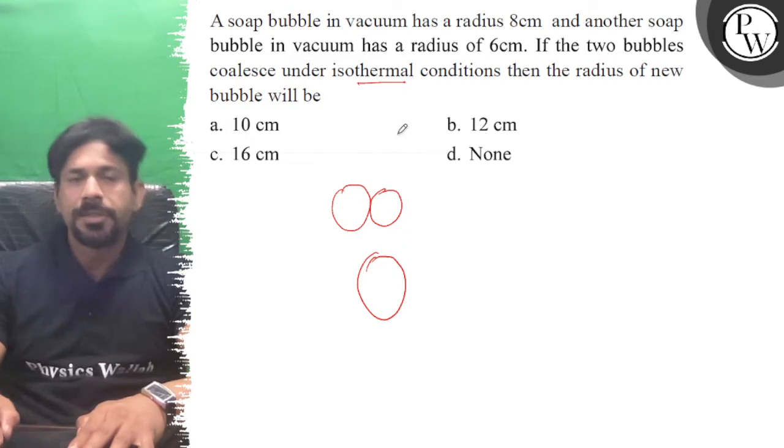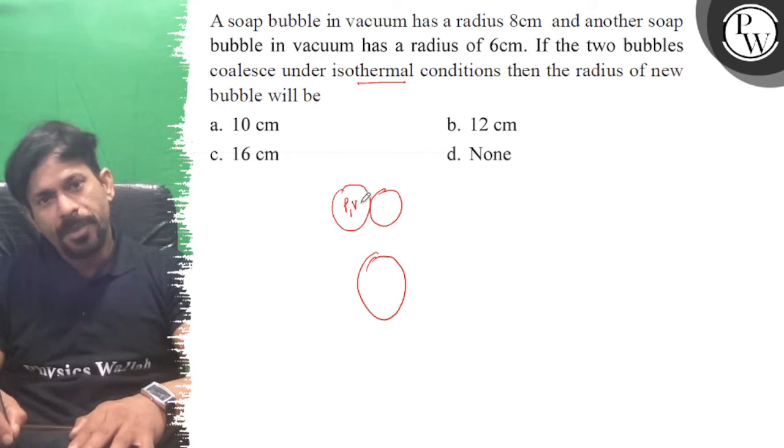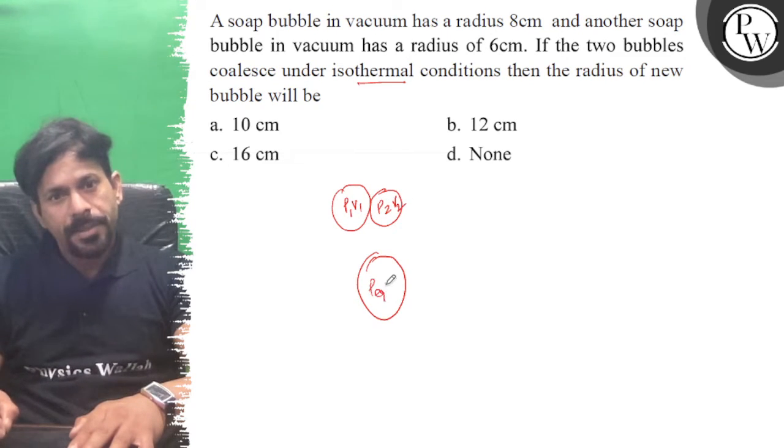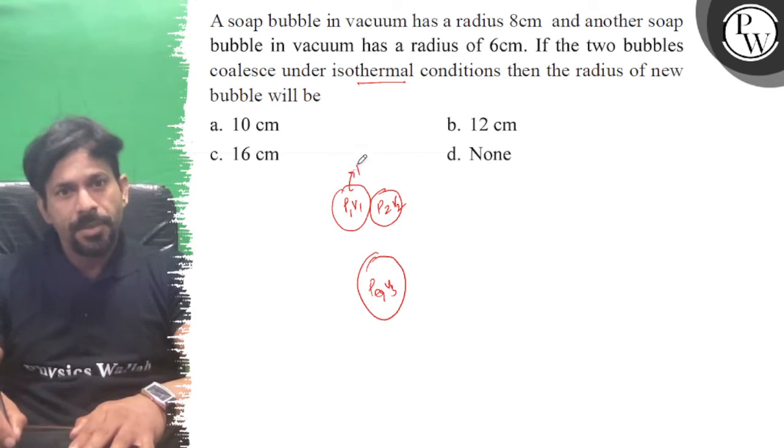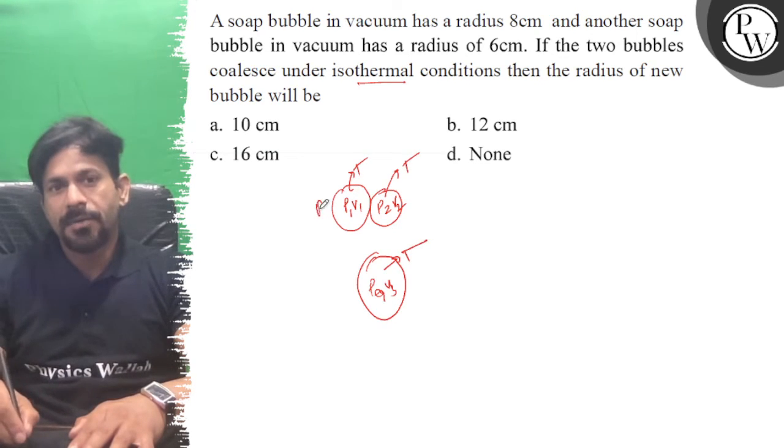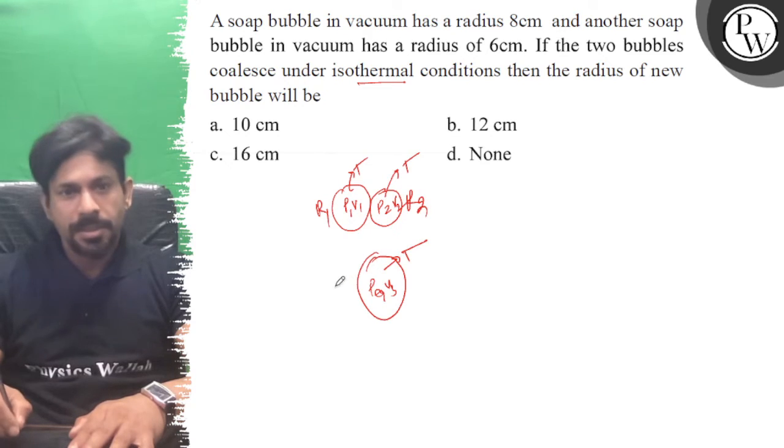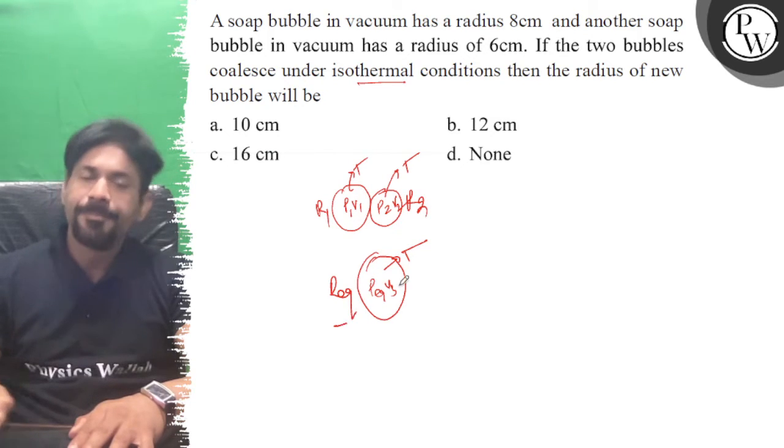Isothermal, temperature same. Here p1 v1, pressure here p2 v2, and here p equivalent v equivalent. So this temperature is T and this temperature is T and this temperature is T. This radius is R1 and this radius is R2 and this radius is R equivalent. So what can we write?